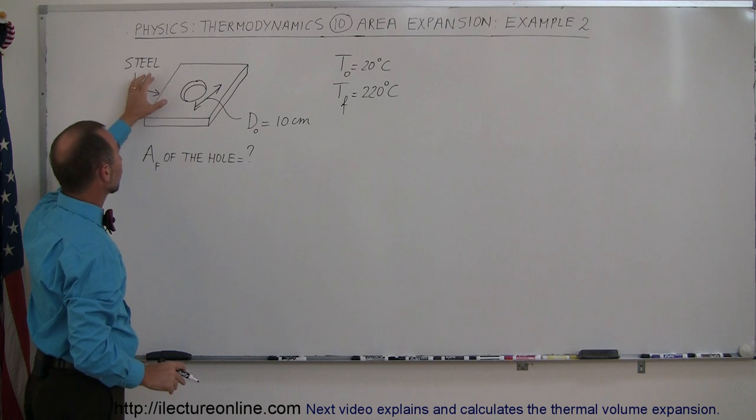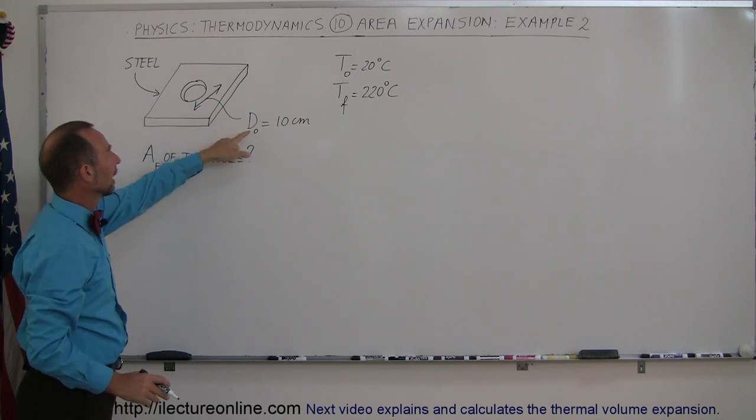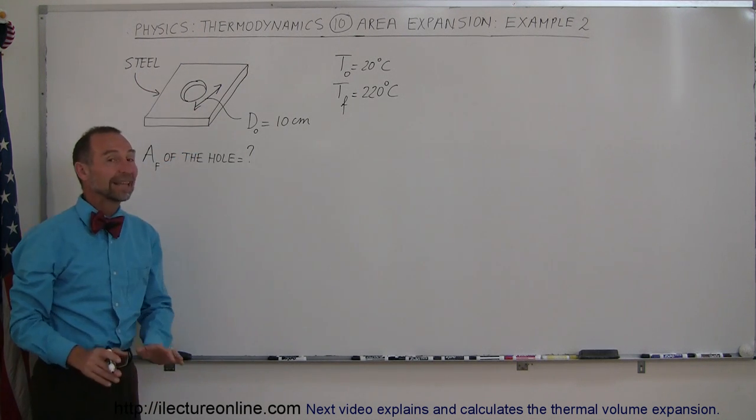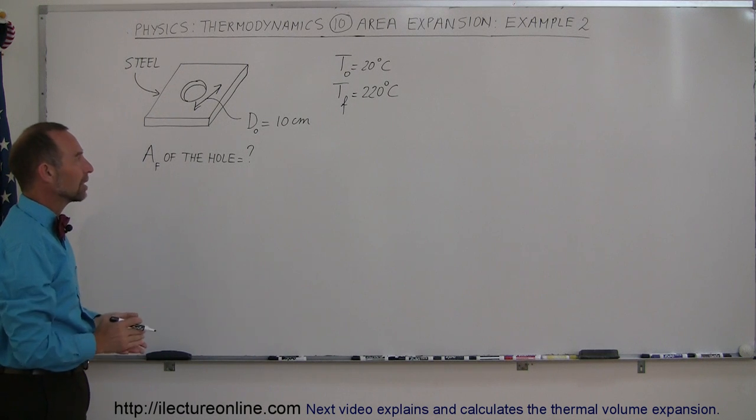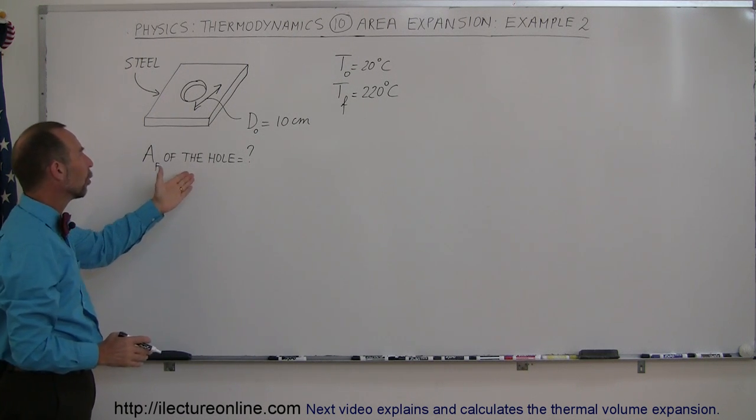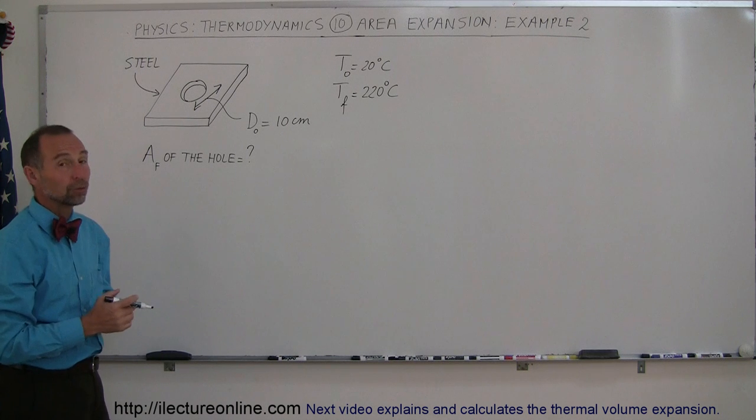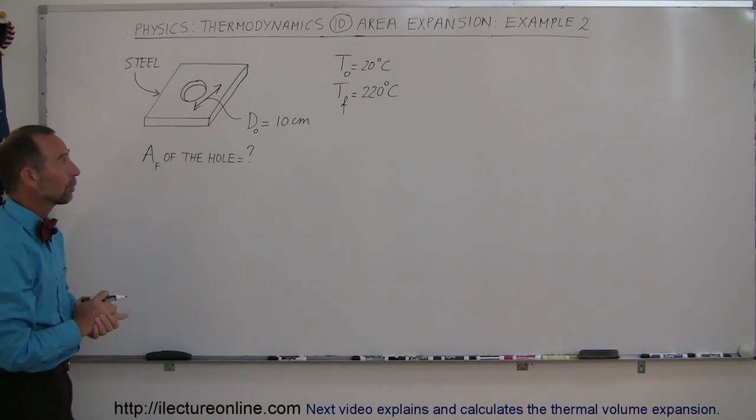Let's say that the plate is made out of steel. It has a hole at the center and the hole has a diameter initially of 10 centimeters before the plate was heated. Now what will be the area final of the hole after it went through that temperature change from 20 to 220 degrees centigrade?